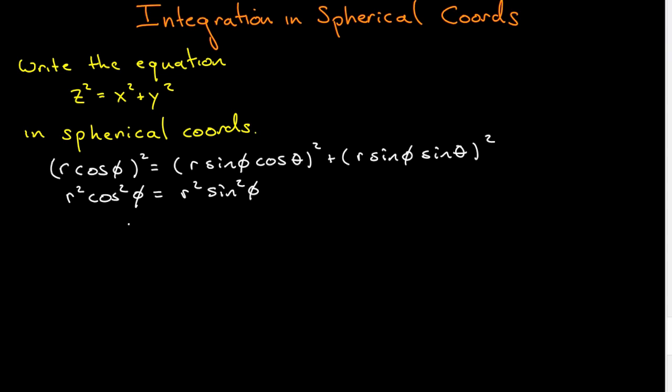And so this will give me tan squared phi equals one. That is to say tan phi equals plus or minus one. So in some sense, these are the answers.